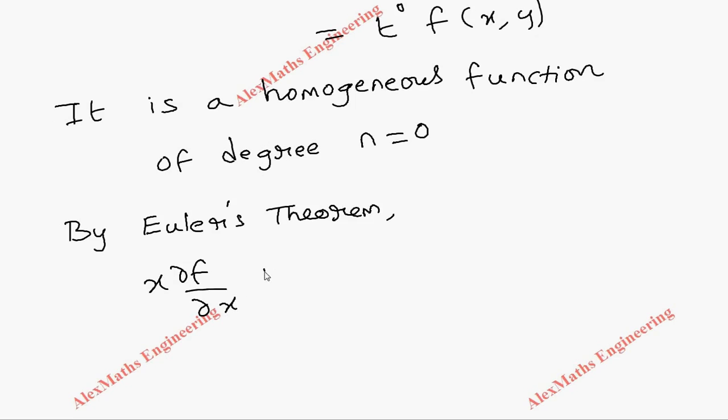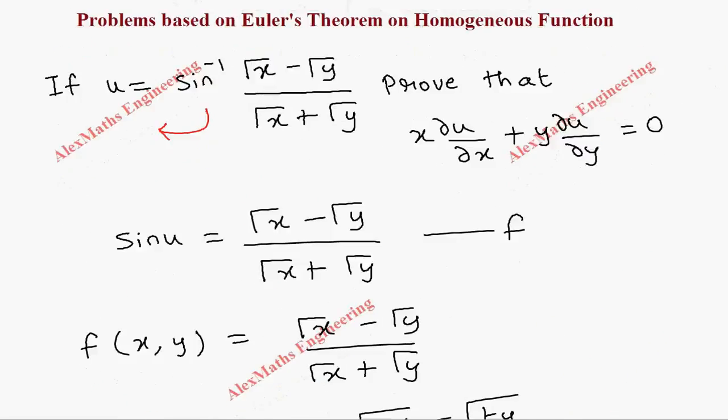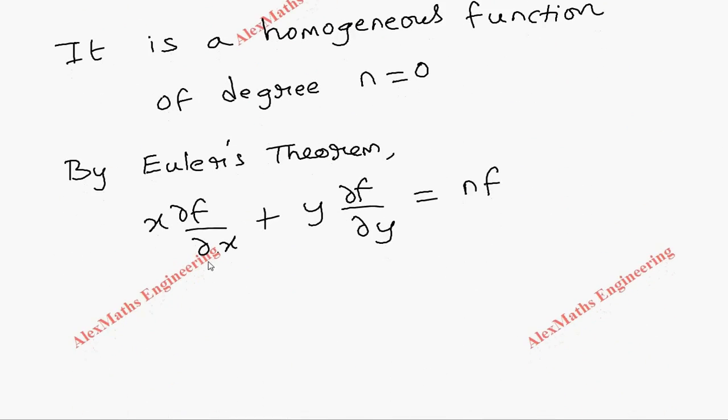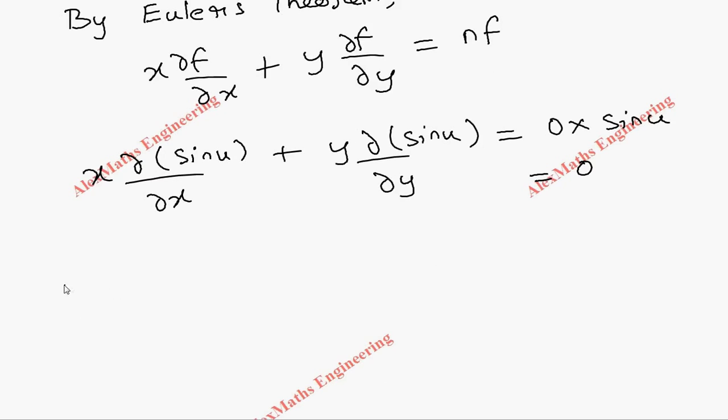In place of f we can use sin u, and in place of n we have to substitute 0. So x into del by del x of sin u plus y into del by del y of sin u equal to 0 into sin u, which means 0. Here the differentiation of sin u is cos u.